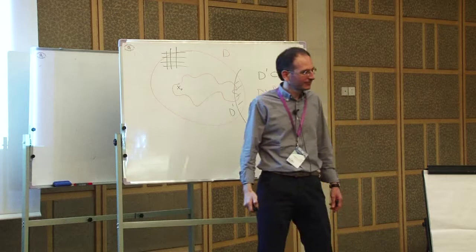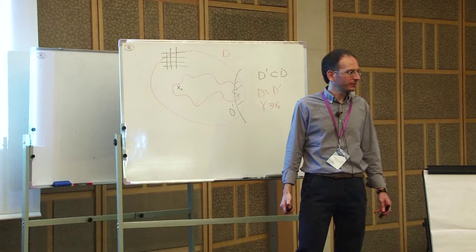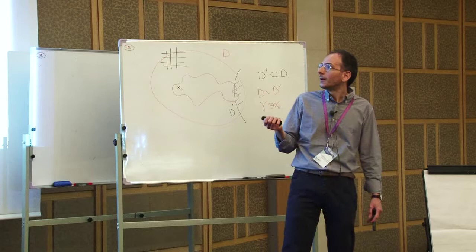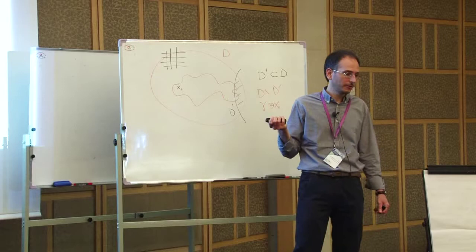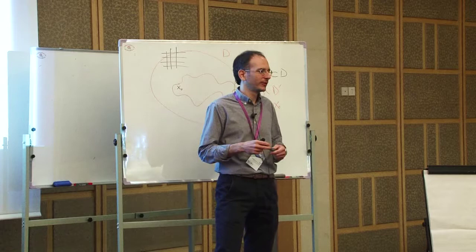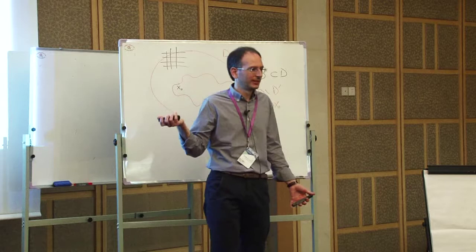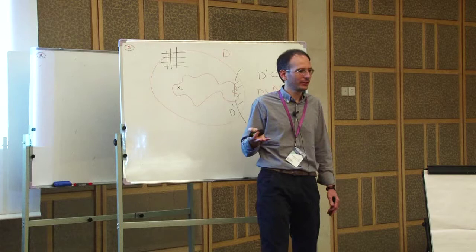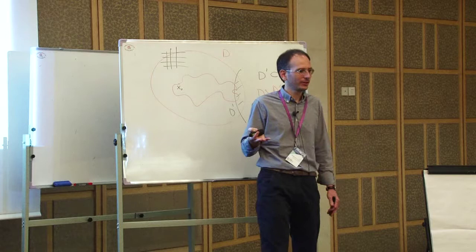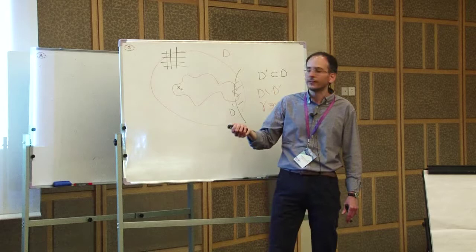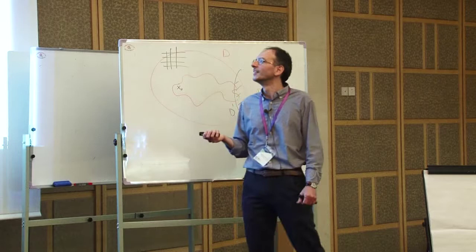The proof is actually, in principle, just a computation: you compute the Laplace transform of the two objects, do Gaussian integration, and see that they coincide. This result could have been proved 30 years ago — it's actually similar to previous isomorphism theorems like the Dynkin isomorphism theorems, but this particular formulation was never noted until recently. The random walk loop soup and the Brownian loop soup in some sense existed already in the physics literature from the 70s and 80s, essentially introduced by Symanzik, and were rediscovered 30–40 years later by probabilists.